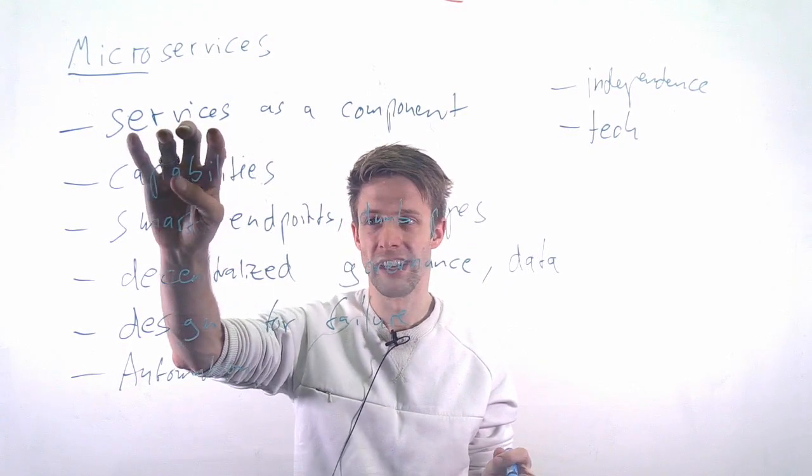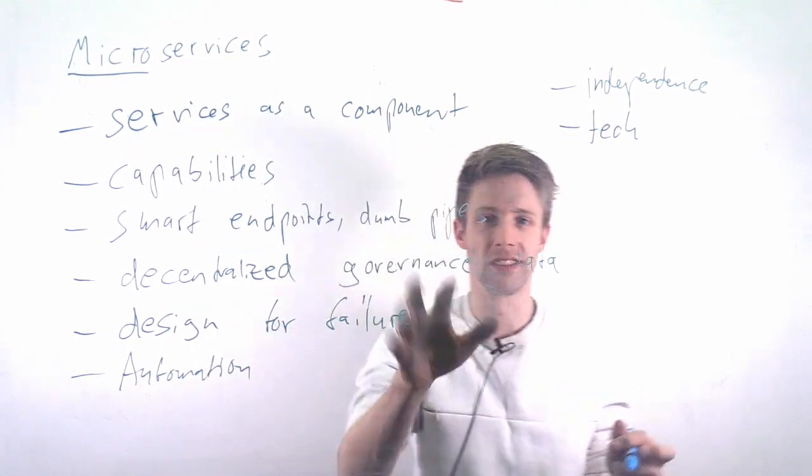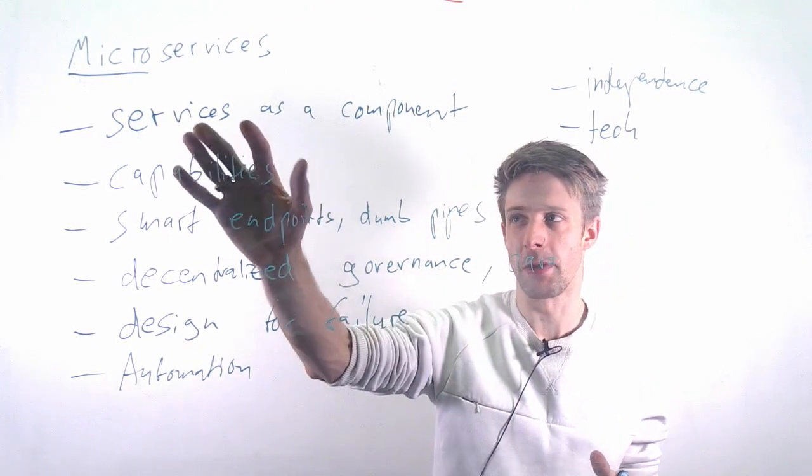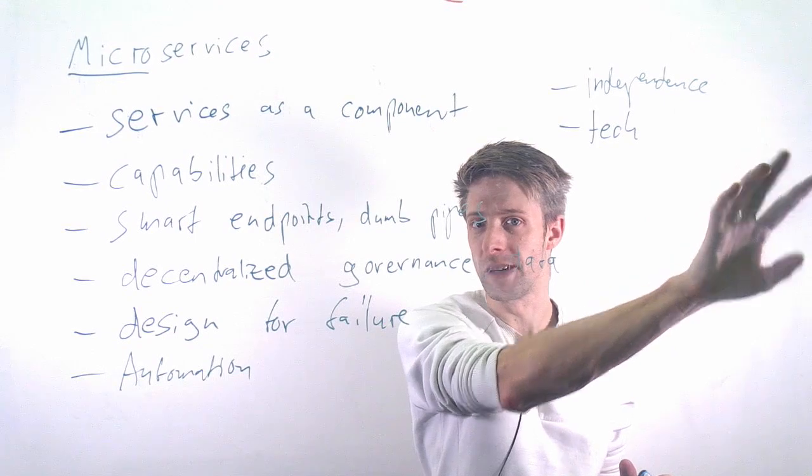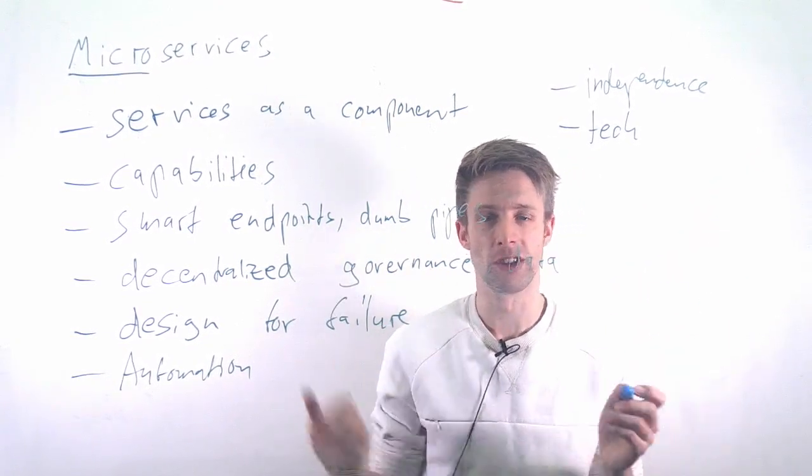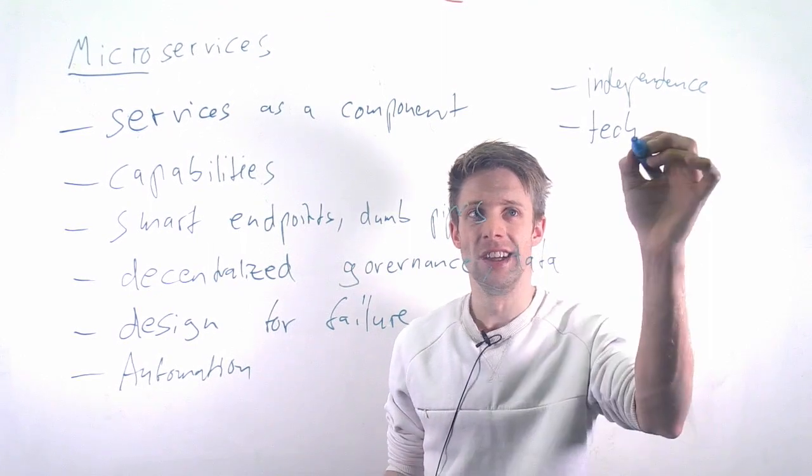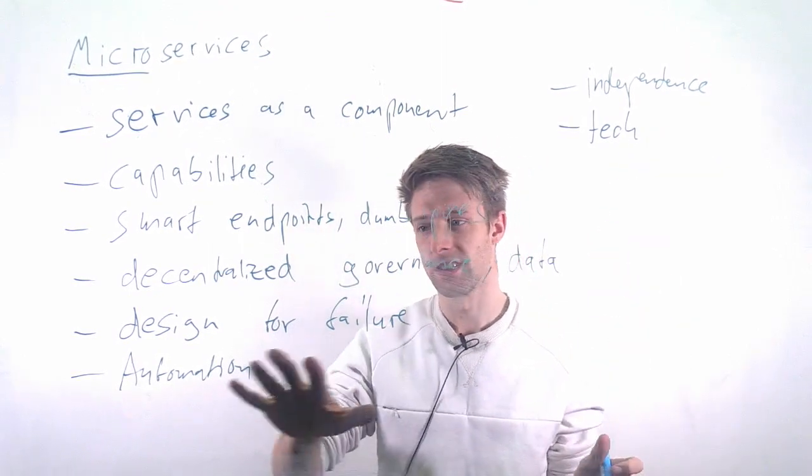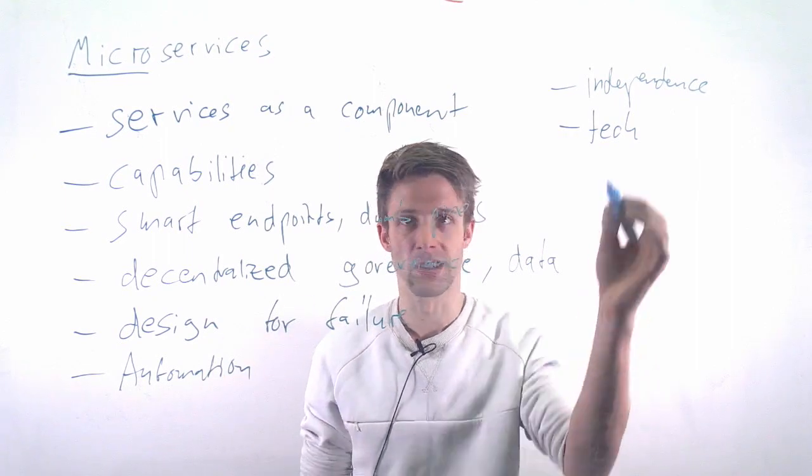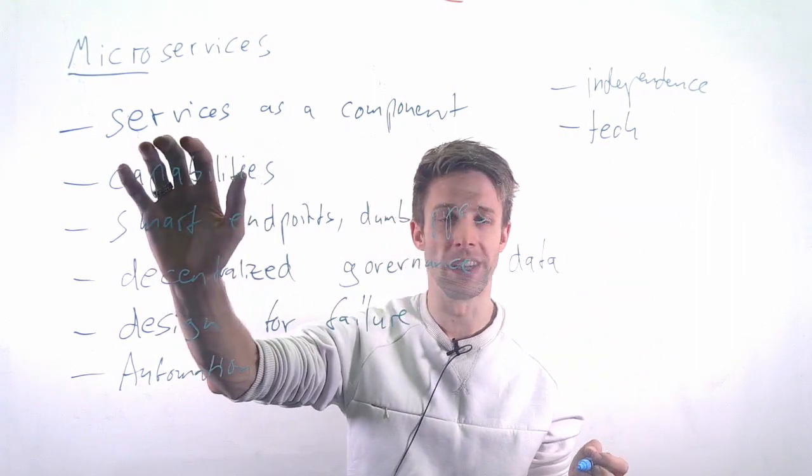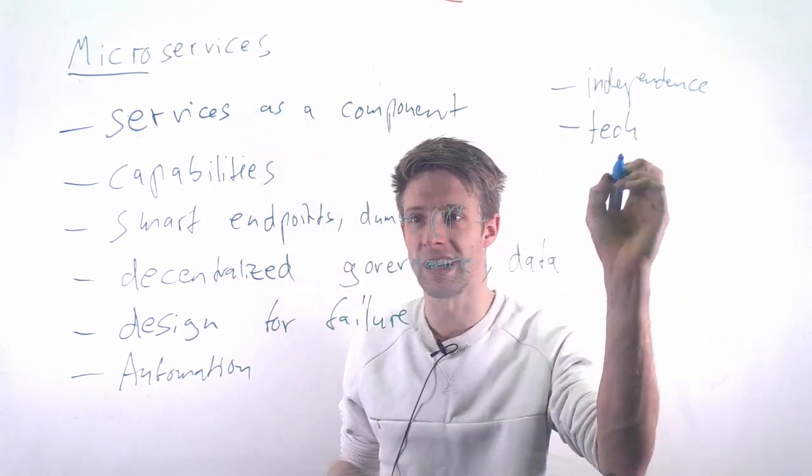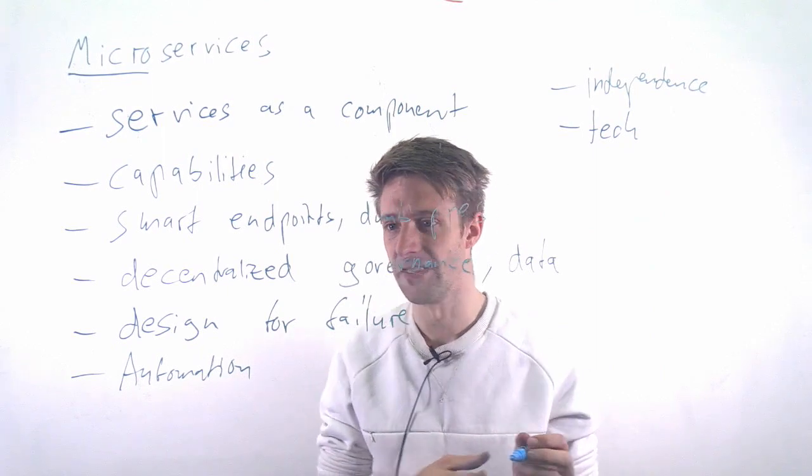You can also have technology independence because if you have your own data, if you have your own service and if the interface between is generic, you can actually implement in whatever language you like. So you could have a Python microservice, you could have a Java microservice and a JavaScript microservice all running and communicating with each other. You could have the database that fits because different databases are suitable for different kind of applications. So it could be that someone has no SQL database, someone has an SQL database and they still work together. So you are quite independent on the technology level.